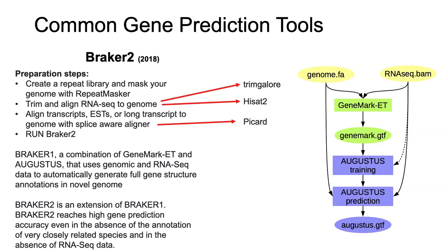After all that pre-processing, you run BRAKER2. There are two versions: BRAKER1, which has been around longer, uses information from two modeling tools along with genomic and RNA-seq data to generate a full gene structure in a novel genome. BRAKER2 takes it further using an advancement of the GeneMarkET model to increase the ability to find genes where there's no reference material at all, improving discovery of truly novel genes.